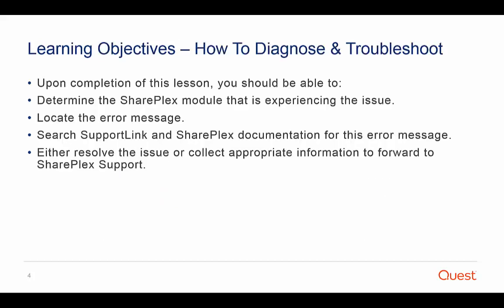Now let's take a look at the basic troubleshooting steps. At the end of this video, you should be able to: determine the SharePlex process or queue that is experiencing the issue; locate the error message first in the event log and then in the appropriate process log; perform your own search or try to resolve the issue on your own; and if you cannot resolve the issue, know which logs to collect and forward to SharePlex support.